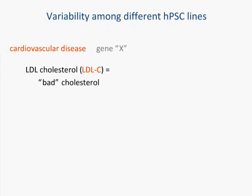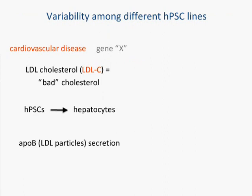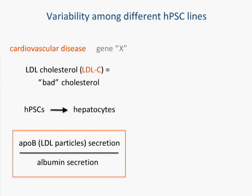In my lab, we're interested in trying to understand the effect of a particular gene on cardiovascular disease, linked to LDL cholesterol — also known as bad cholesterol. You might think of making IPS cells or pluripotent stem cells and differentiating them to hepatocytes or liver cells, the cells that produce LDL cholesterol. A mechanism by which you might measure cholesterol production is to look at the apolipoprotein B particle, which carries LDL, and its secretion from these liver cells. To be rigorous, you'd want to use a denominator to quantify that over the amount of liver cells in a dish.